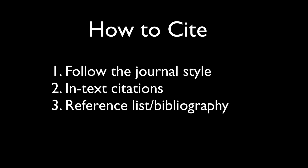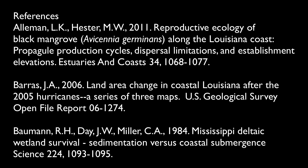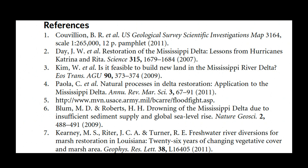Finally, ensure all in-text citations have a corresponding entry in the reference list with complete details. The formatting of the references will vary with the journal but generally include author names, year of publication, paper title, journal name, volume, and page numbers. References are arranged alphabetically by the lead author's last name. Some journals use a numbering system based on order of mention in the text.